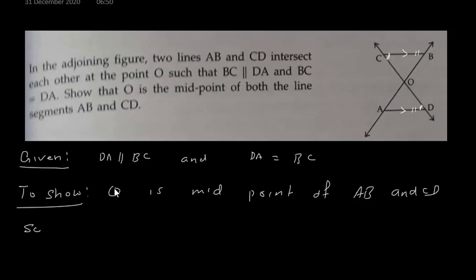And what I have to prove or to show — I have to show that O is the midpoint of AB and CD. This we have to show. Now let us start the solution. We will take triangle OAD and triangle OBC.